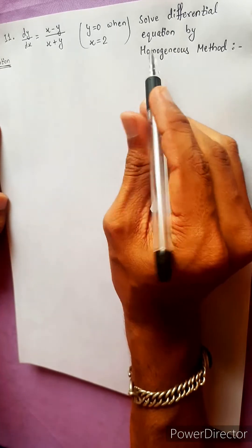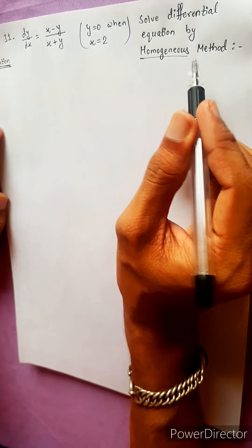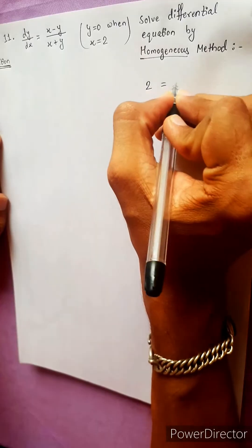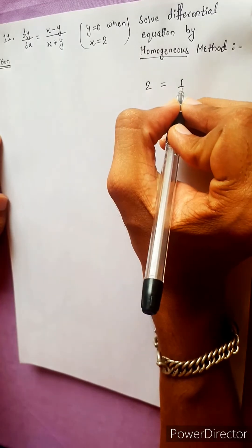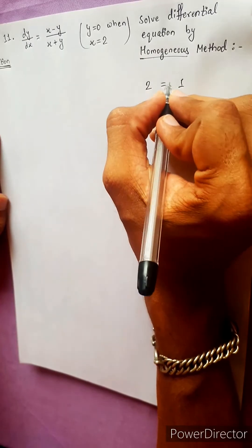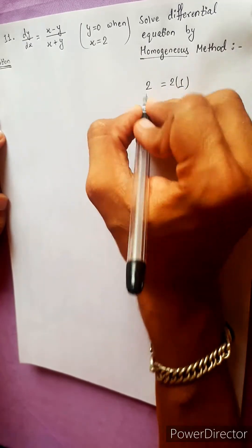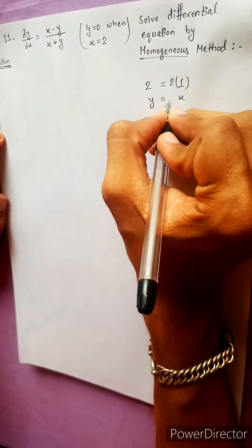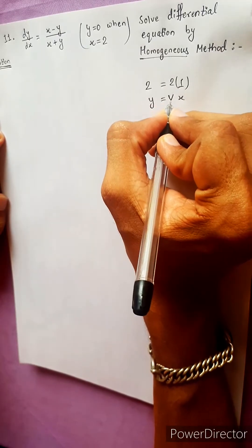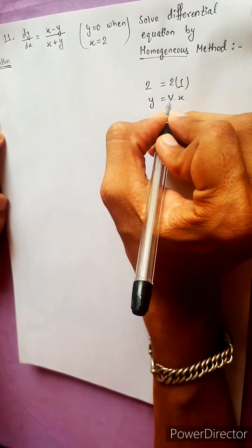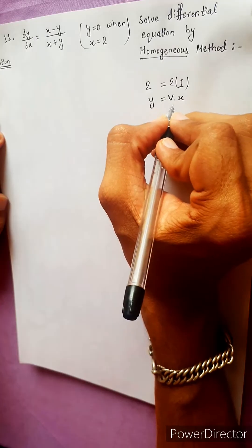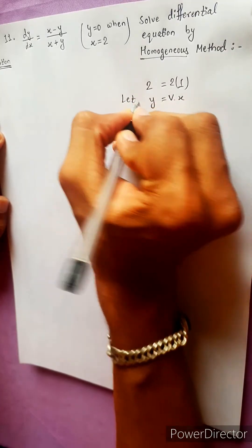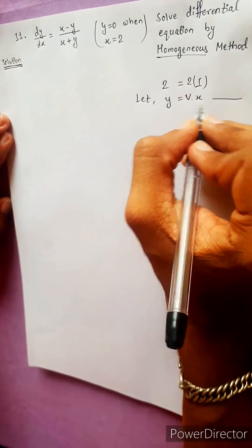Solve the differential equation by the homogeneous method. In the homogeneous method, we substitute y equals vx. This substitution is used whenever multiplying all variables by a constant gives the same form. Let x, y, z, a, b, c be variables — when we multiply, we get the homogeneous form. Now let us differentiate slightly.